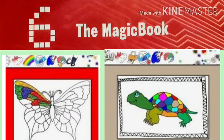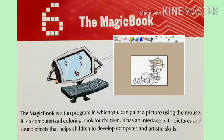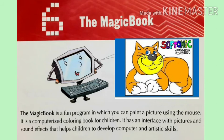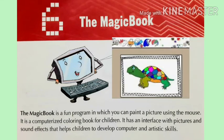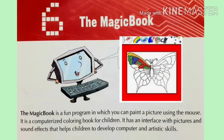Chapter 6: The Magic Book. The Magic Book is a fun program in which you can paint a picture using the mouse. It is a computerized coloring book for children. It has an interface with pictures and sound effects that helps children to develop computer and artistic skills.